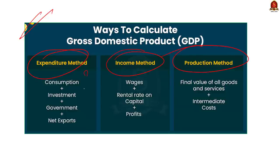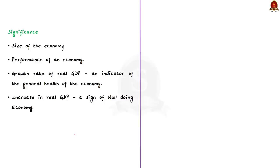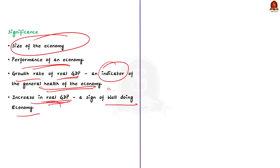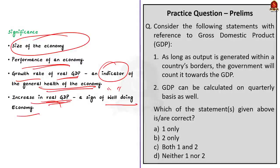GDP is important because it gives information about the size of the economy and how the economy is performing. The growth rate of real GDP is often used as an indicator of the general health of the economy. An increase in real GDP is interpreted as a sign that the economy is doing well. This is a very important topic from the prelims perspective. With these key points in mind, let's move on to the prelims practice question discussion.